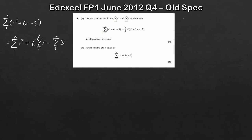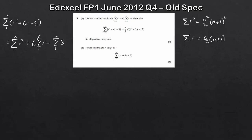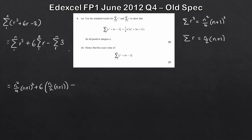We haven't written the formula for r cubed yet. The formula for the sum of r cubed is n squared over 4 times n plus 1 squared. And for r, the sum of r is n over 2 times n plus 1. Now, if you've got just a constant like 3 going from 1 to n, that would simply be 3 times n — so in this case it's minus 3n. Let's put all this together.